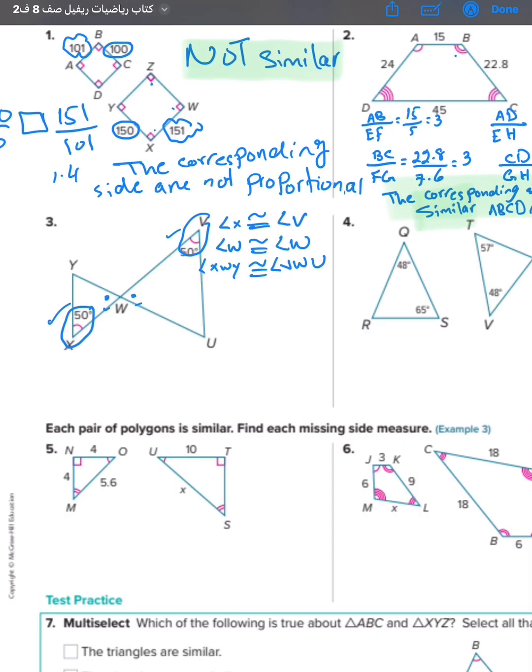So two angles are congruent, so they are similar. You can say triangle XWY is similar to triangle VWU. Why? Because the angles are congruent. Here it didn't have any numbers for the sides. Finish question number four.